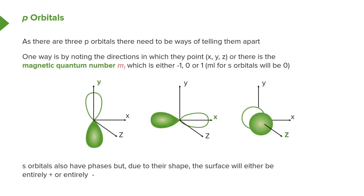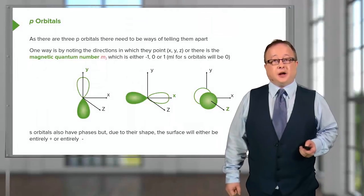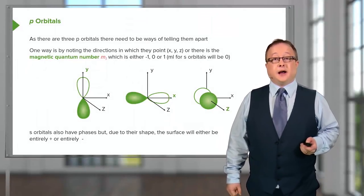Since there are three P-orbitals, there needs to be a way of telling them apart. They are degenerate — you can superimpose one on the other by a simple rotation around 90 degrees. A way of defining an electron in a given P-orbital is via the magnetic quantum number, or ML — not to be confused with MS, which is a different one we'll come onto later. This helps us to define the direction of an orbital as well as its type: the orbital running along the y-axis, then the x-axis, and then the z-axis.